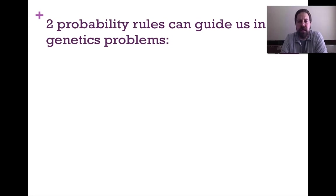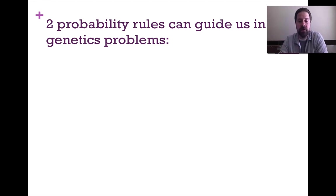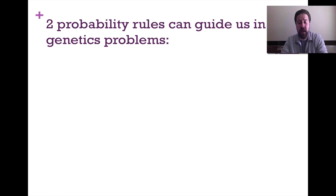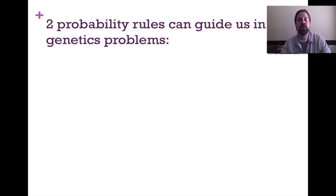Hi guys. As we study Mendelian genetics, one thing we have to understand is that probability is going to be intertwined with Mendelian genetics. We can take a look at outcomes of crossing monohybrids or dihybrids, and then we can calculate probabilities of certain events happening. We have rules that guide us to those numerical probabilities.